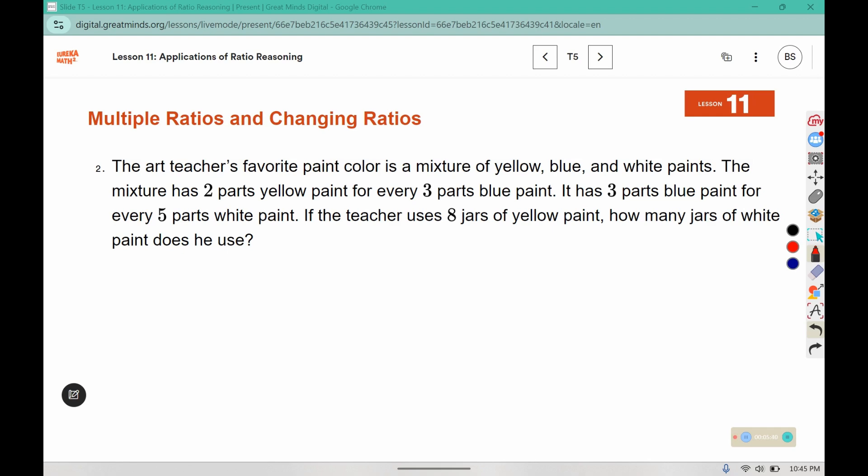Number two says the art teacher's favorite paint color is a mixture of yellow, blue, and white paints. The mixture has two parts yellow for every three parts blue, so two parts yellow and three parts blue. It has three parts blue paint for every five parts of white paint. If the teacher uses eight jars of yellow paint, how many jars of white paint does he use? If the yellow is eight and the yellow gets split into two parts, that should be four in every box. So the white paint has to be four, eight, twelve, sixteen, twenty jars.